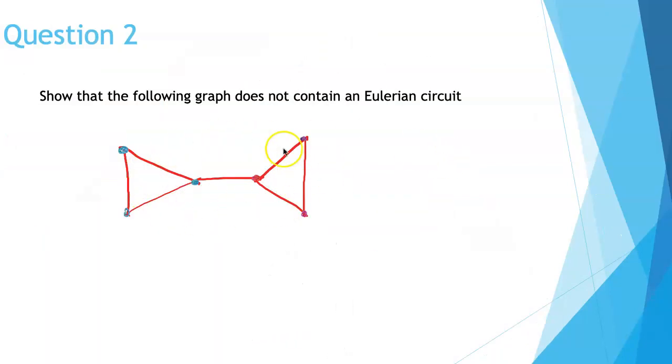Question 2. Show that the following graph does not contain an Eulerian circuit.